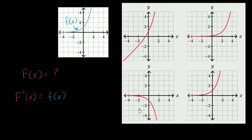I encourage you to pause this video and try to think about it on your own before we work through it. If this curve is going to be the derivative of one of them, that means that for any x value, it's describing what the instantaneous rate of change, or what the slope of the tangent line is. So what do we know about lowercase f of x, which is the derivative of one of these?